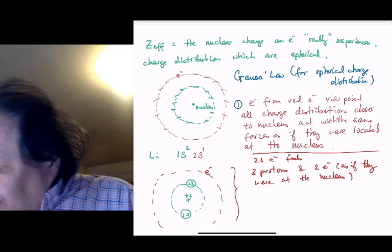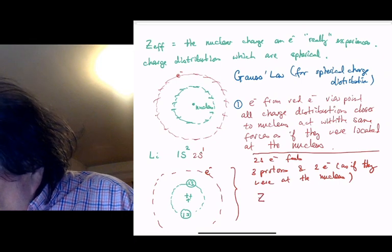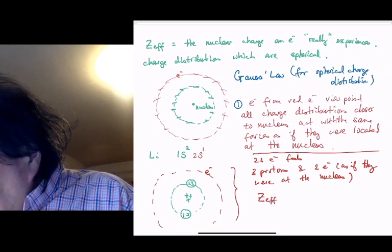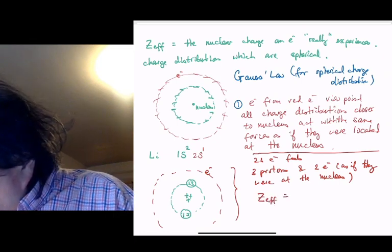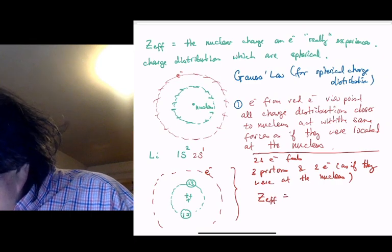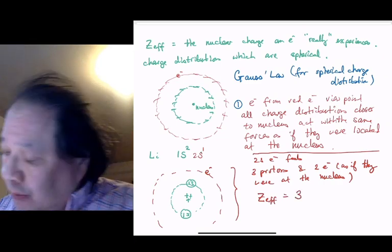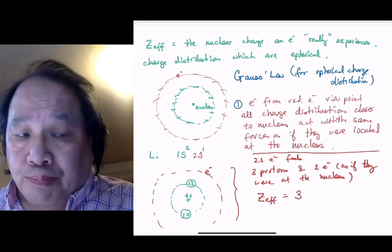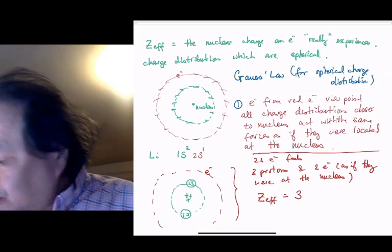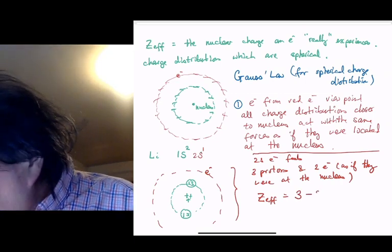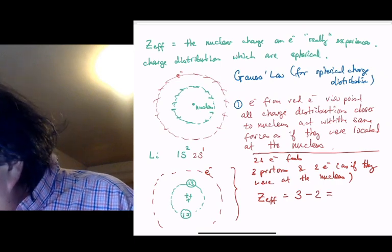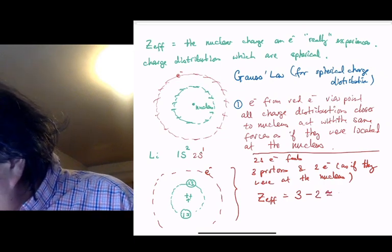That's minus 2. The Z-effective for the 2s electron is not 3, which is the number of protons. Those two 1s electrons are exerting the same force as if they were at the nucleus. That's minus 2, so we get an approximate value of Z-effective of 1.